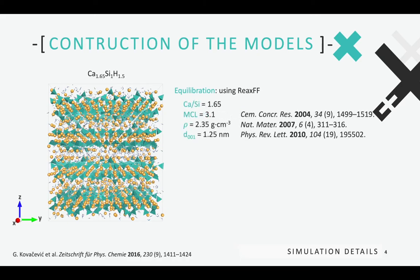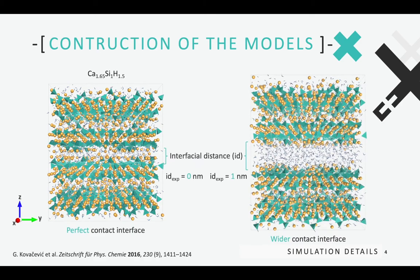The final structure obtained is in good agreement with experimental values, with a mean chain length of about 3.1, an overall density of 3.35 g per cubic centimeter, and an average basal distance of 1.25 nanometers. To study the role of the interface in shear stress relaxation, we created split pores by inserting extra space in the central perfect contact interface up to 1 nanometer. The interfacial space is saturated with water to reach the bulk water density, and the systems are equilibrated again in the isobaric-isothermal ensemble for 2 nanoseconds at room conditions. The different interfacial models will hereinafter be referred to by the value of the expansion of the interfacial distance instead of the effective interfacial distance.